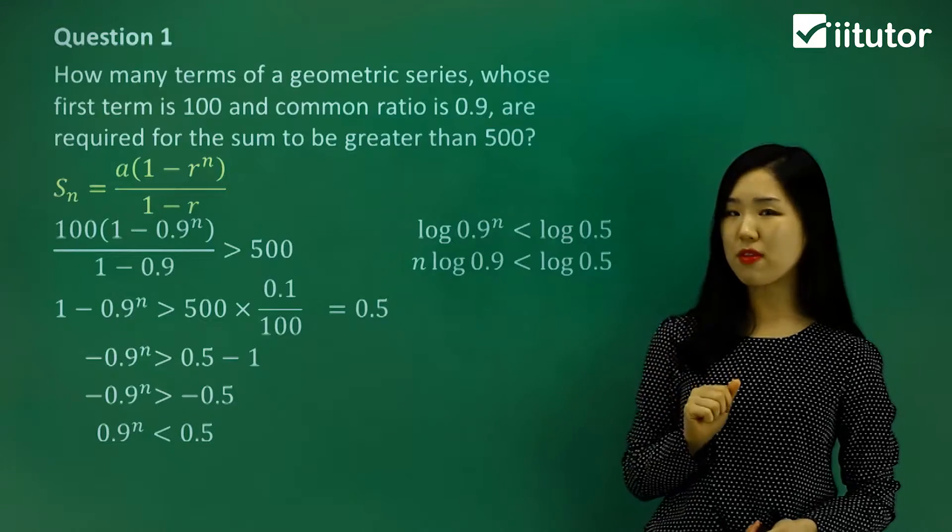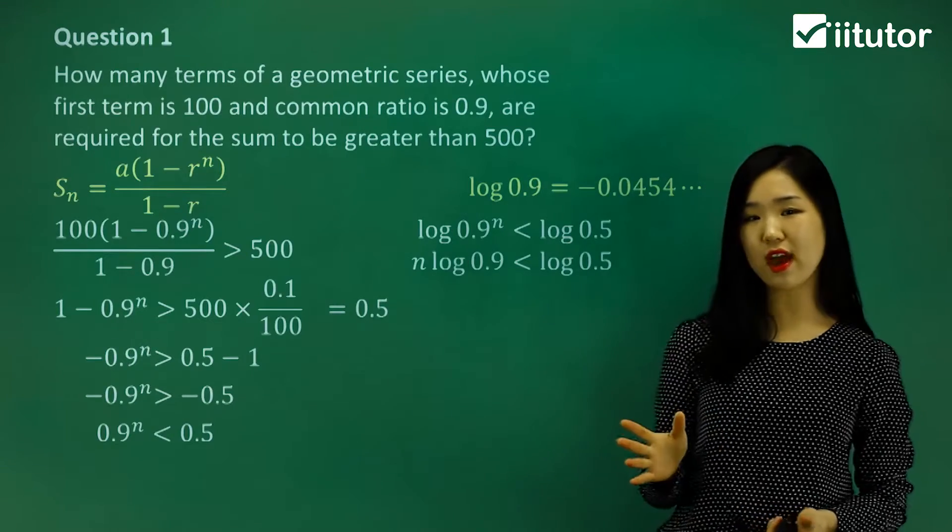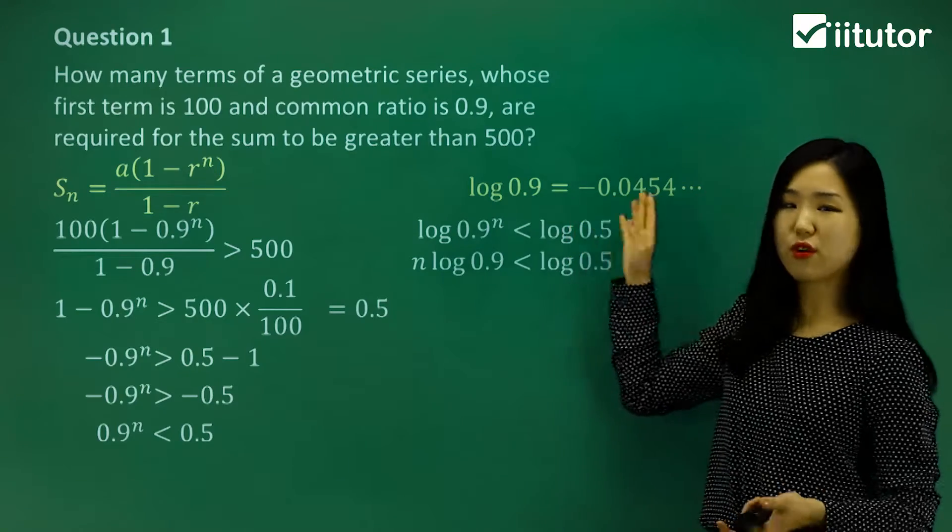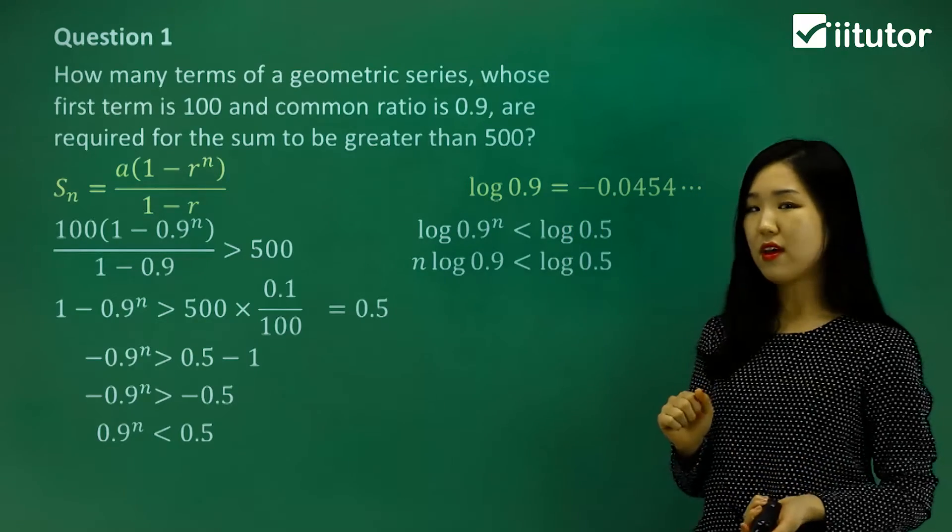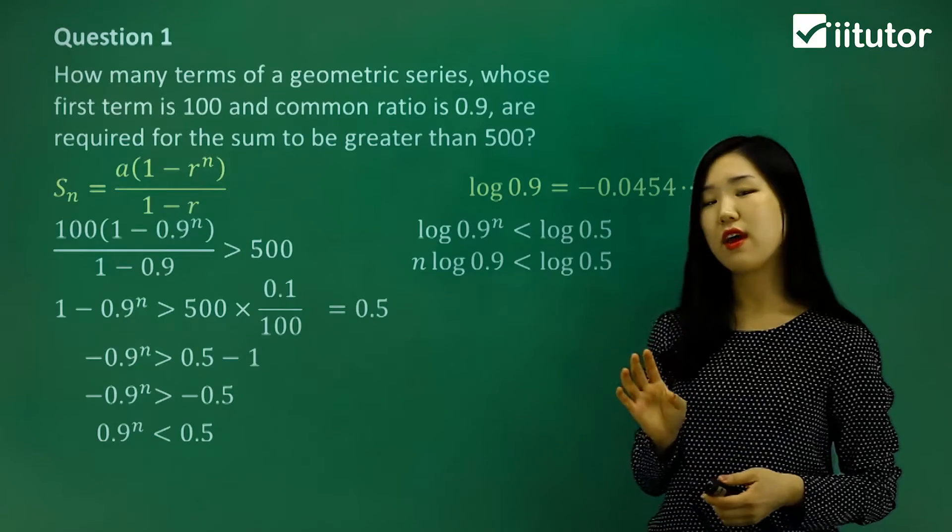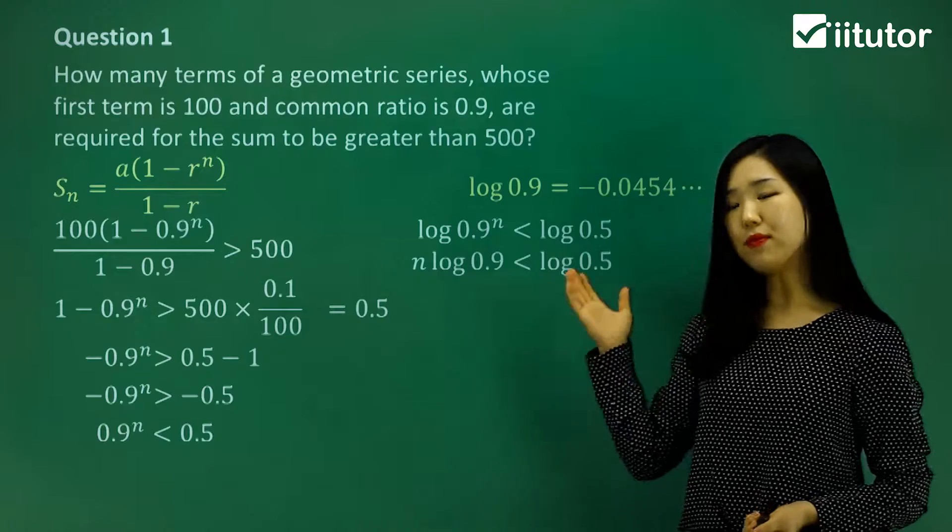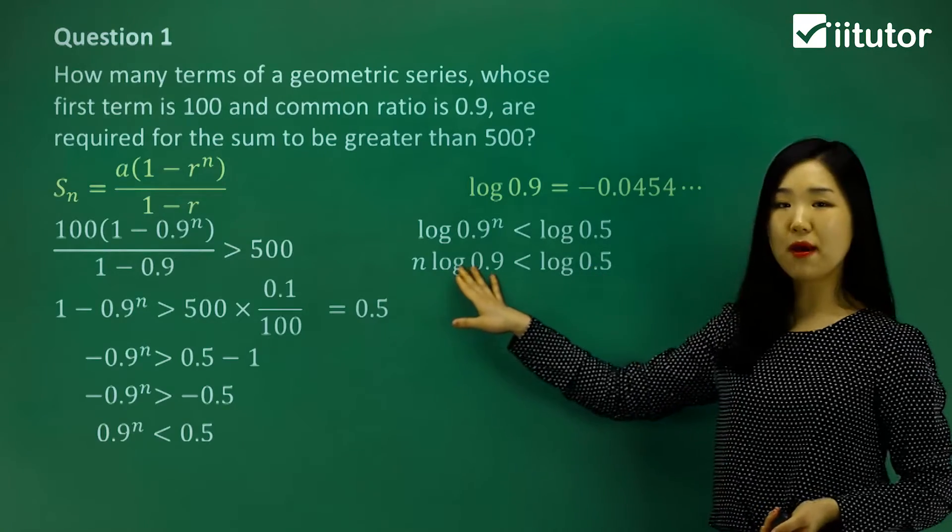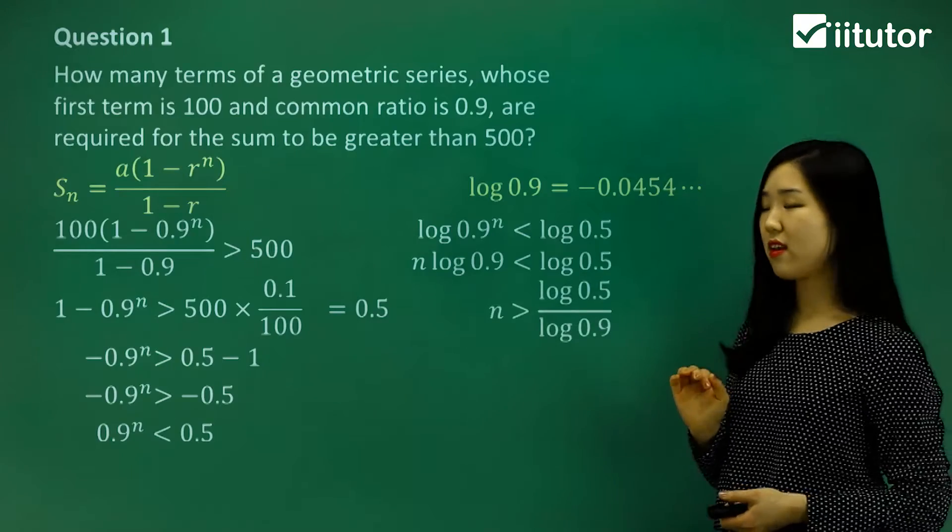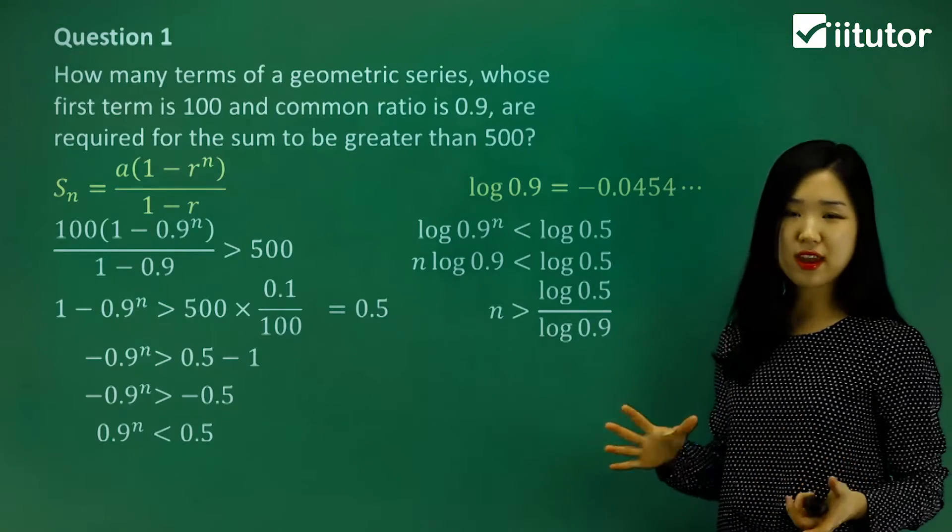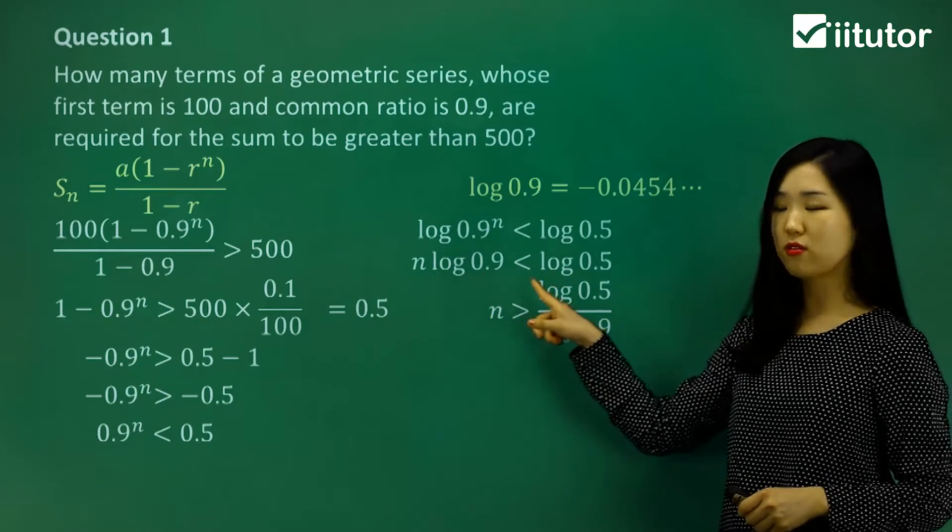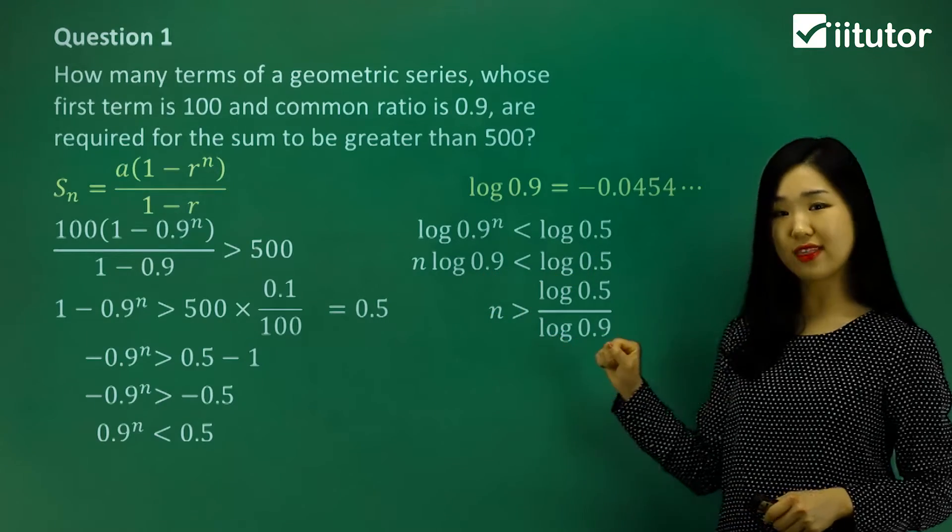But just remember this for me. Log 0.9, if you put it in the calculator, you'd get a value of something like negative 0.04. It's going to be a negative number. So usually with numbers that are less than 1, we usually get log functions as a negative outcome. So trying to keep that in mind. So if this is a negative number, and I want to divide by a negative number, we have to switch the sign. So remember when we divide by a negative, we switch the sign around. So we know that this is a negative number, so I change the inequality sign around like that.